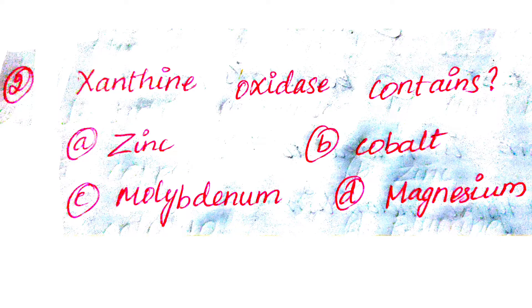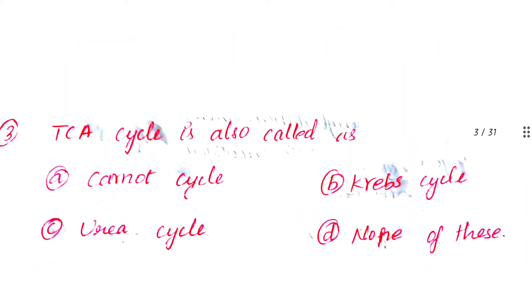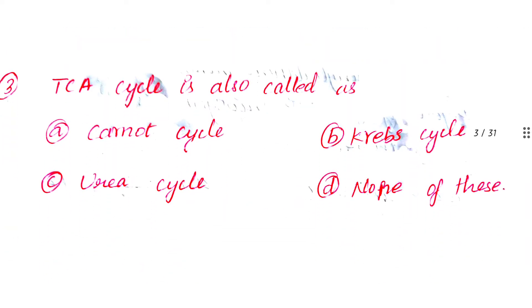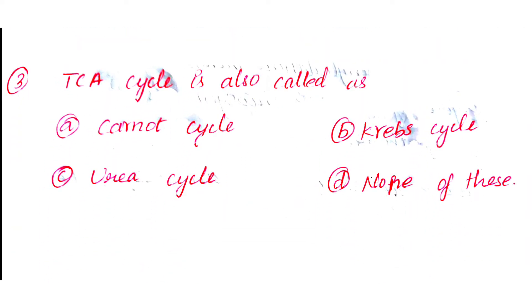Question number 3: TCA cycle is also called as. Option A: Carnot cycle. Option B: Krebs cycle. Option C: Urea cycle. Option D: None of this.